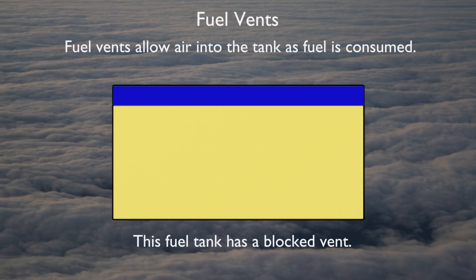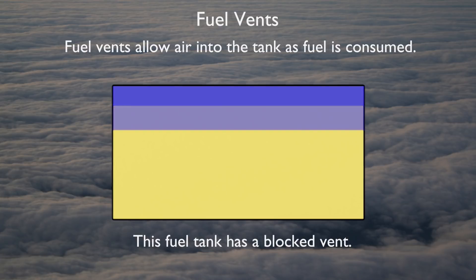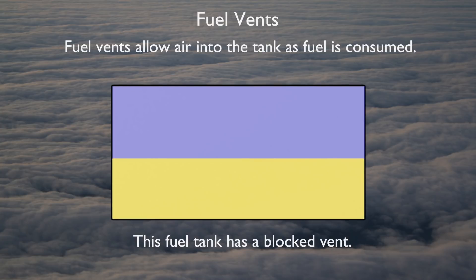Fuel vents allow air to enter the fuel tanks as fuel is consumed. If air were not allowed into the fuel tanks to replace fuel as it was burned, suction would be created inside the fuel tanks. As the fuel burned, this suction would be greater and greater, counteracting the fuel pumps.